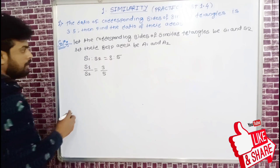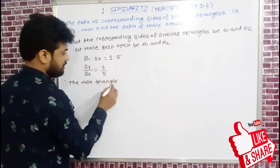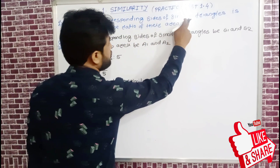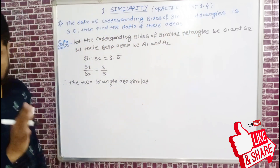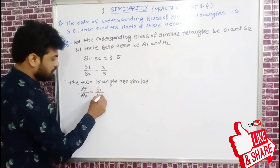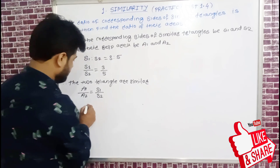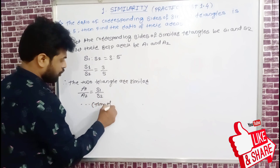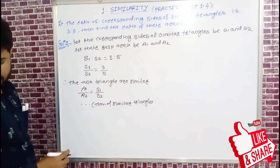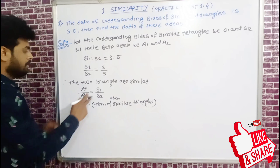Now the two triangles are similar. By the theorem of area of similar triangles, a1 upon a2 equals s1 squared upon s2 squared. We apply the theorem of areas of similar triangles and square the ratio of sides.